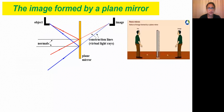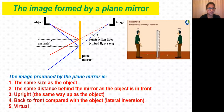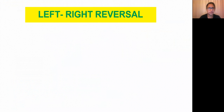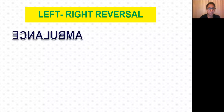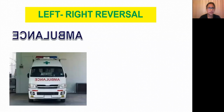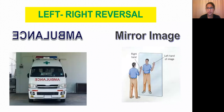The characteristics of the image produced by a plane mirror are: it is the same size as the object, it is at the same distance from the mirror, it is laterally inverted, virtual, and upright. Lateral inversion means left-right reversal — you may have seen that the word 'AMBULANCE' is written in reverse on the vehicle so that drivers ahead can read it correctly in their rear-view mirror.